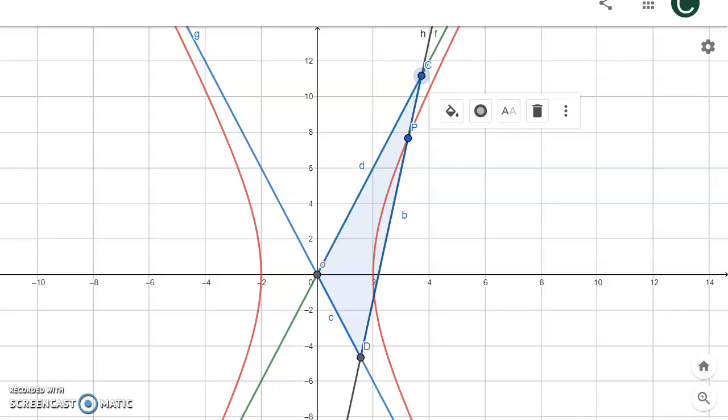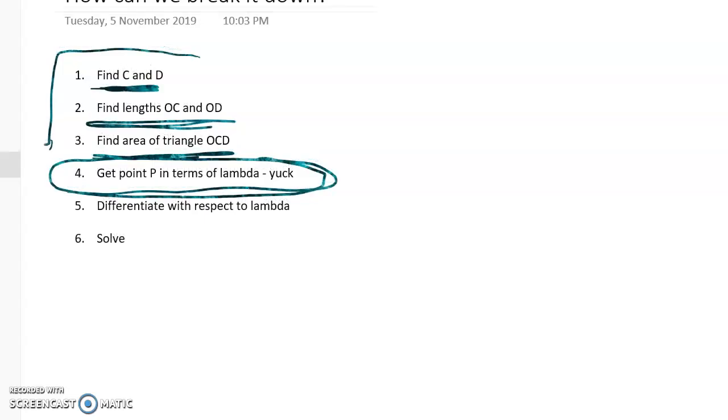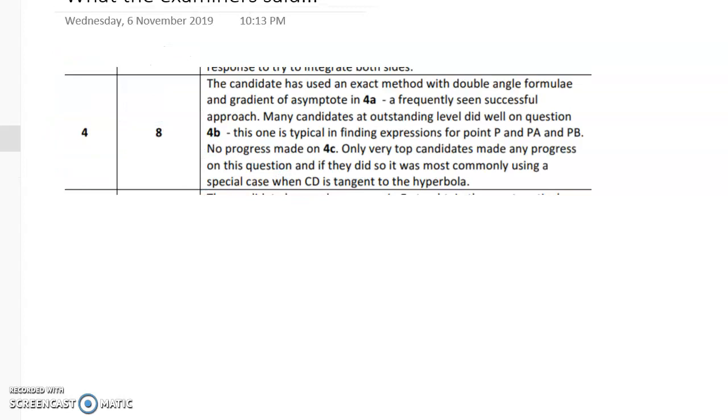So if you go back, let's go back now into solving the problem. First of all, let's see what the examiners said. Well basically they said that this was from the outstanding scholarship exemplar - that this student had made no progress on question 4C. And this student still got 8 out of 8. So it's a pretty bad problem. Let's go back into how we break it down.